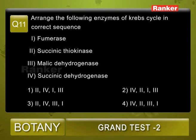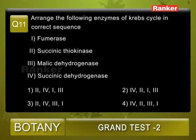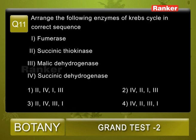Question number eleven: arrange the following enzymes of the Krebs cycle in correct sequence. One — fumarase, two — succinic thiokinase, three — malic dehydrogenase, four — succinic dehydrogenase. Options: one - 2,4,1,3; two - 4,2,1,3; three - 2,4,3,1; four - 4,2,3,1. Krebs cycle takes place in the mitochondrial matrix during aerobic respiration. Acetyl CoA (2C) reacts with oxaloacetic acid (4C) to form citric acid (6C).